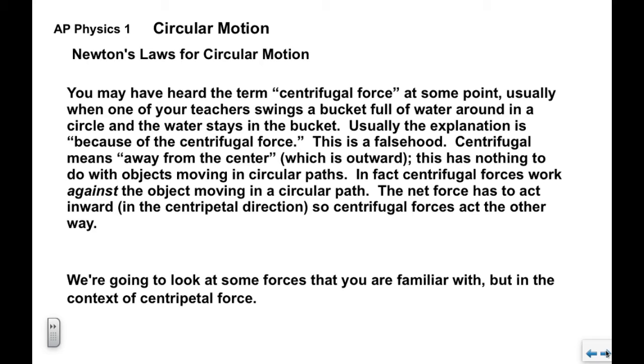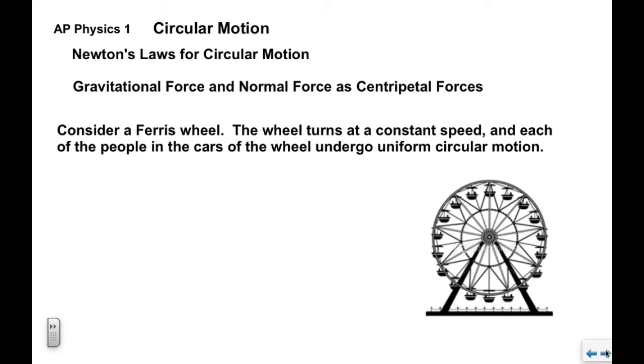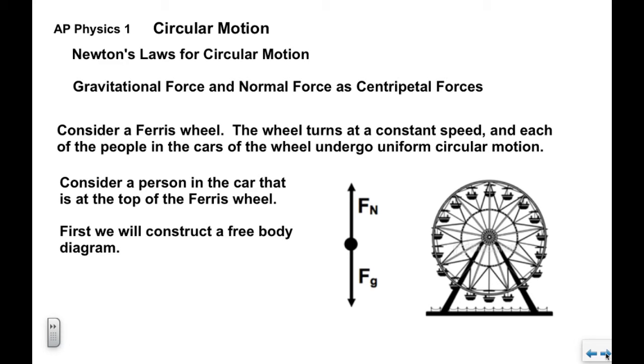Now we're going to look at a number of forces that you're familiar with but we're going to look at them how they apply in situations where we have an object moving in a circle. So first we'll look at gravitational and normal forces. If we consider a ferris wheel, the wheel turns at a constant speed and in these cars of course there are people and the people in the cars undergo uniform circular motion. If we look at a person that's in the car at the top, we construct a free body diagram and again there's nothing new here. We know FG, we know FN. FG always points down and assuming the person is sitting in a chair the FN would point up.